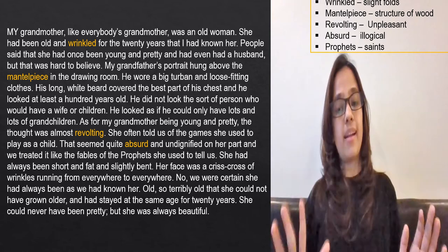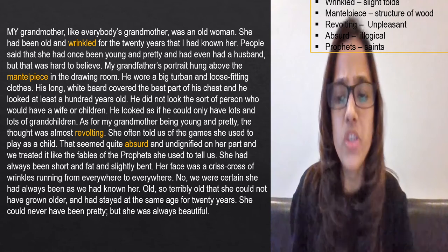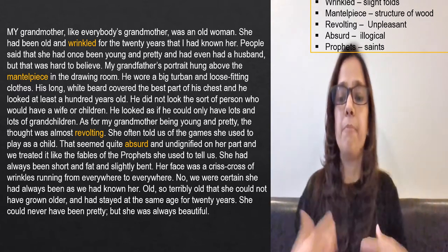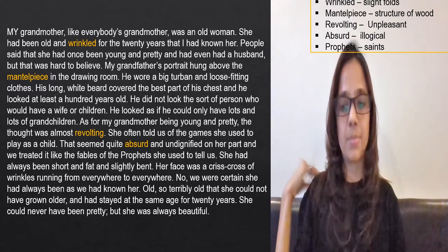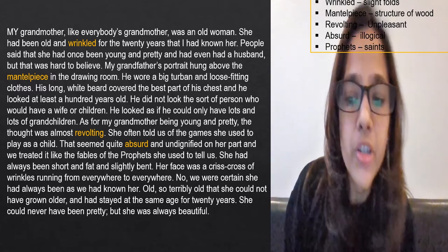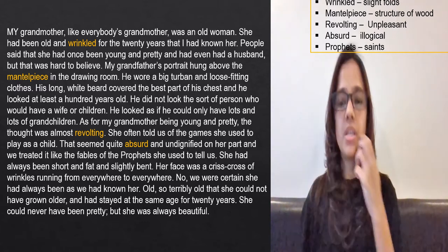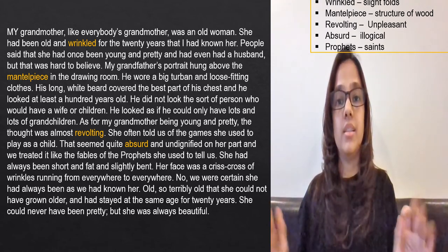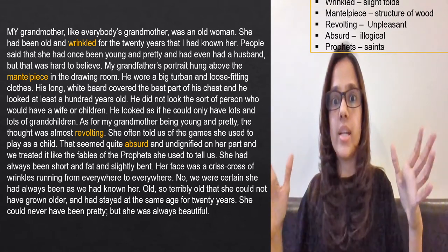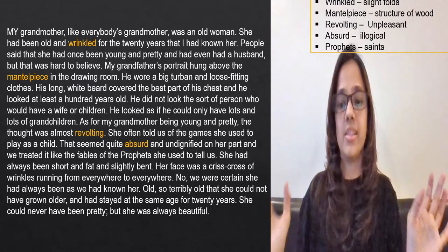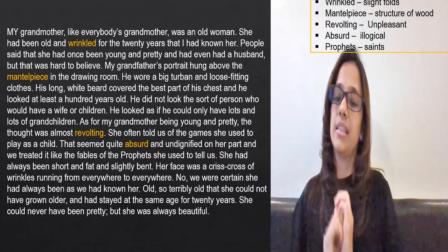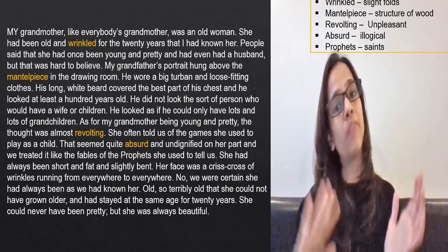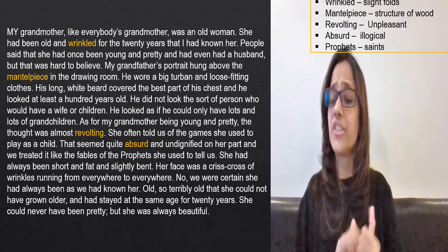She could never have been pretty — but she was always beautiful. The author is saying his grandmother is short, a little fat, and bent. As people age, their bones weaken, so they walk with a stick and bend down. He's saying that looking at her condition, he can never think she was pretty. For him, she has been this same terribly old age for 20 years — but she was always beautiful.